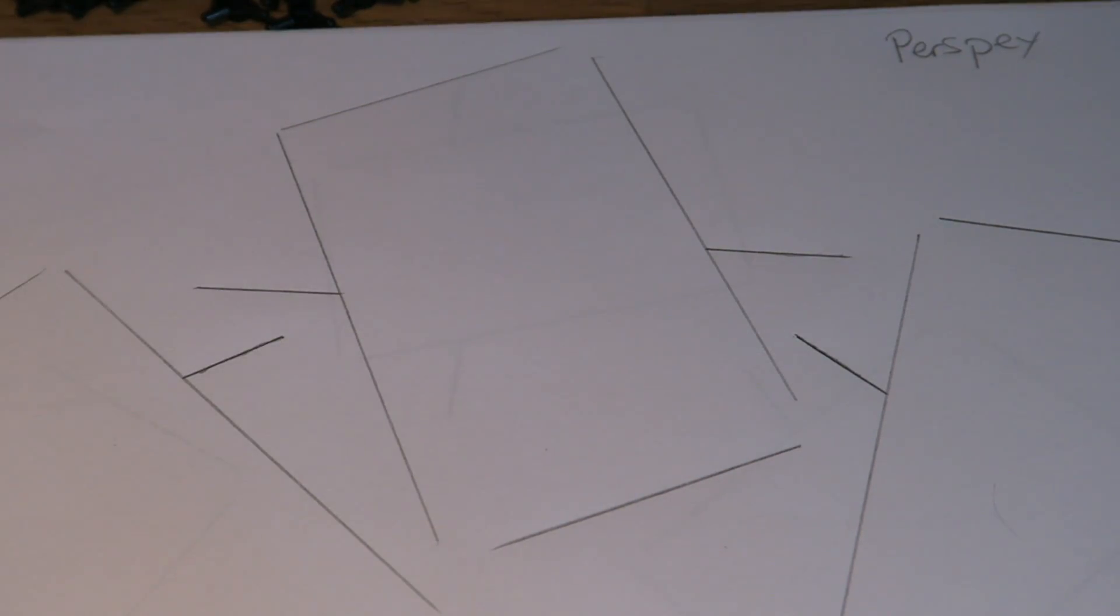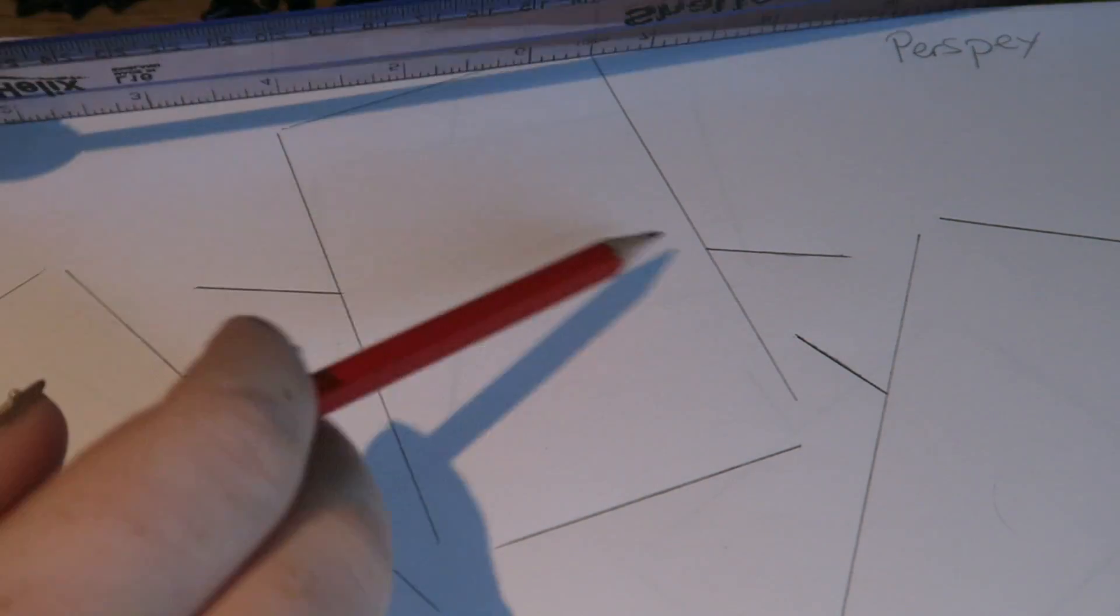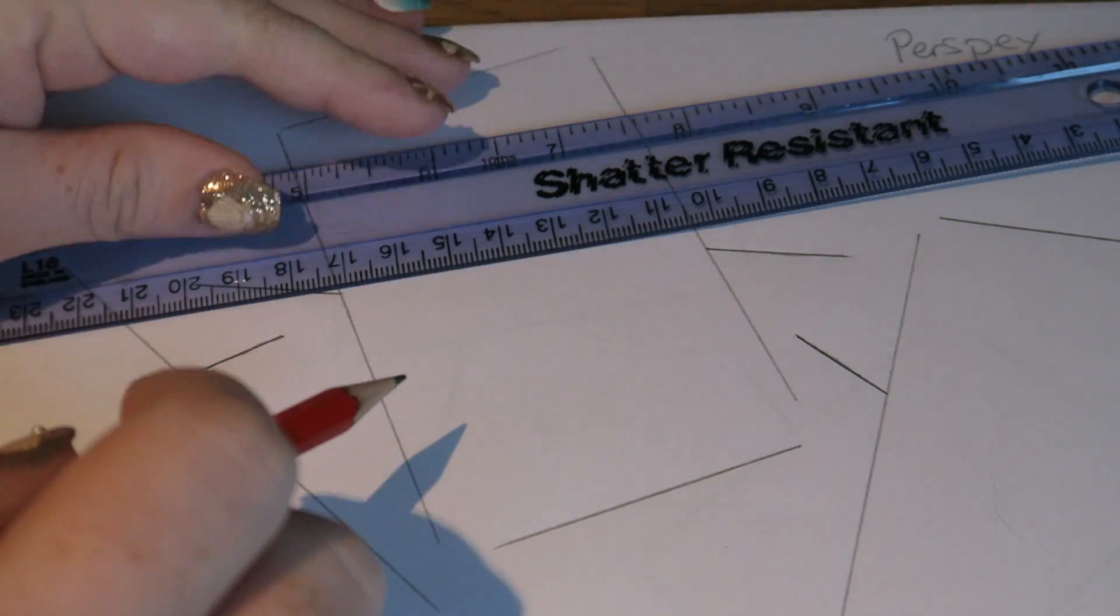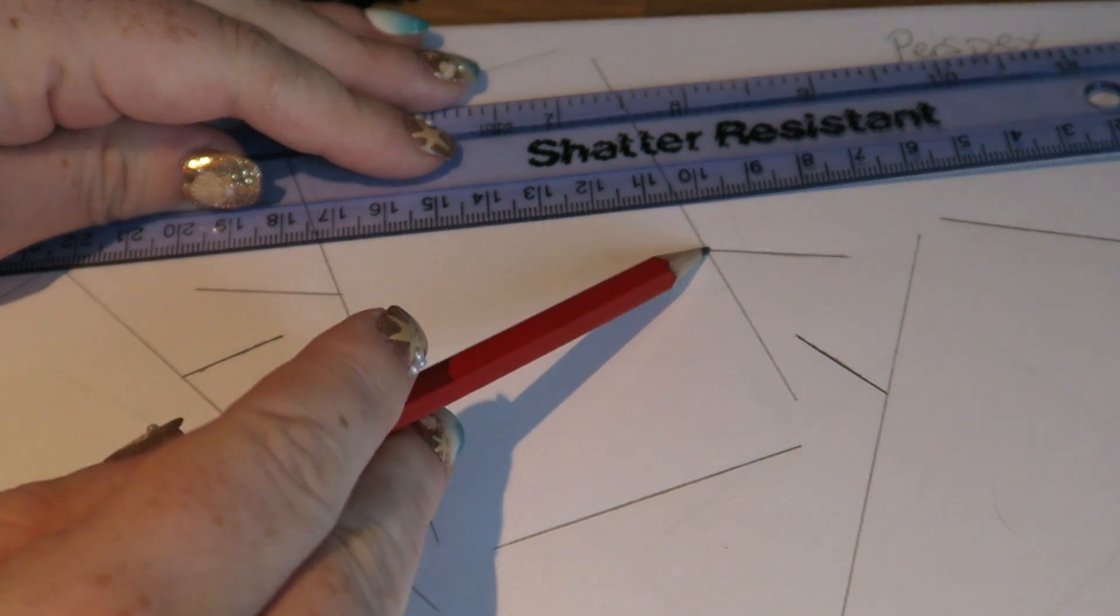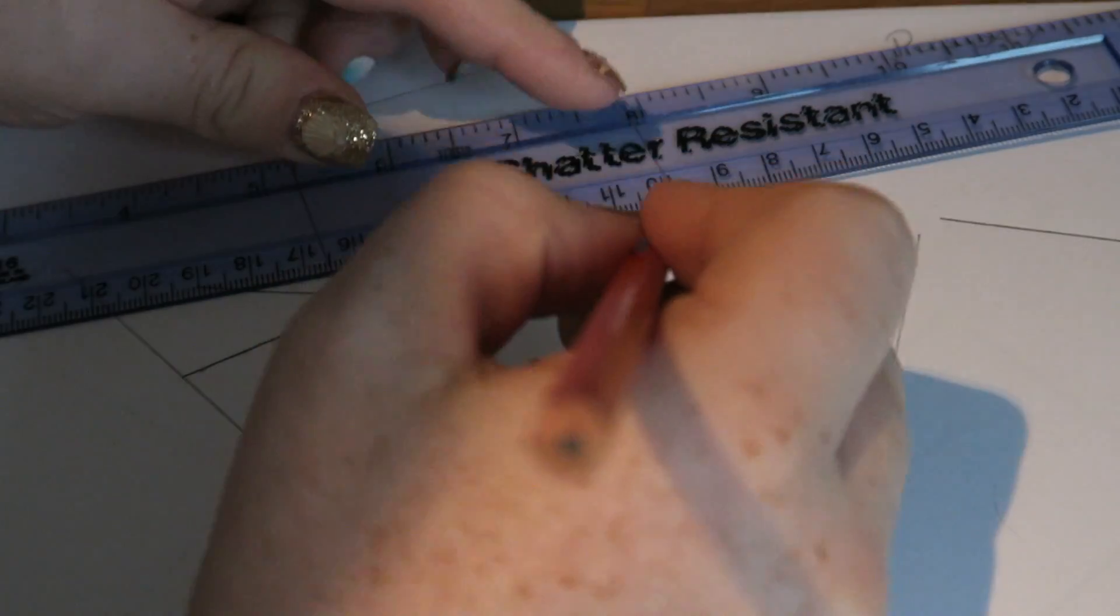So I'm going to do it for this block in the middle here. I've drawn around the block, and this is my ray going in and my ray going out, and the first thing I'm going to do is to join up the two rays of light.